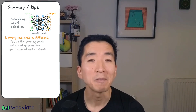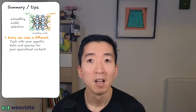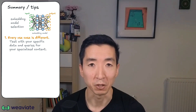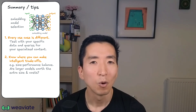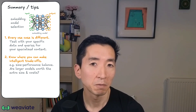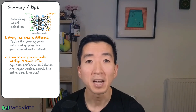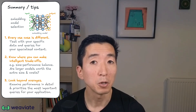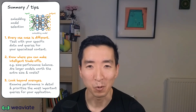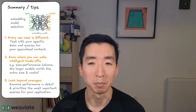Here are three practical recommendations to improve your selection process. First, recognize that every use case is different. While benchmark leaders are a good starting point, always test with your specific data and queries — a model that excels on general benchmarks might underperform on your specialized content. Second, know where you can make intelligent trade-offs. A classic one is the size-performance balance: while larger models generally perform better, the improvements may not justify the additional cost and complexity. Sometimes a smaller, more efficient model delivers 95% of the performance at 20% of the resource cost. Third, look beyond averages. A model might have a great overall score but perform poorly on the specific types of queries that matter most to your users. Examine performance across different query categories and prioritize what's most important for your application.